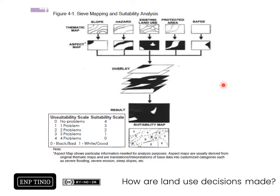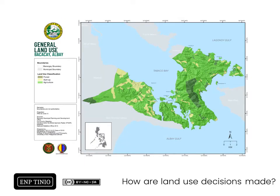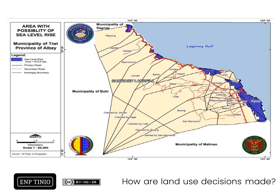One way planners make land use decisions based on physical conditions is through sieve mapping and suitability analysis. Various thematic maps are made into aspect maps focusing on one particular category of interest, and these are overlaid to produce results. For example, in the municipality of Makakay in Albay, forest, built-up, and agriculture areas were identified and delineated based on verified and validated slope, soil, and elevation data.